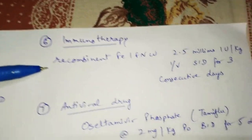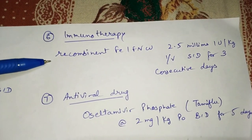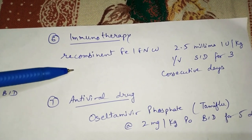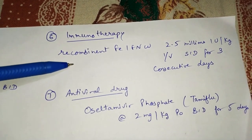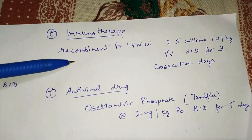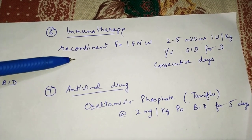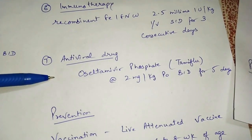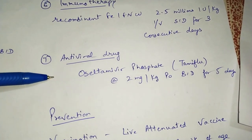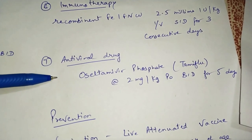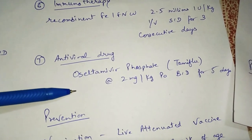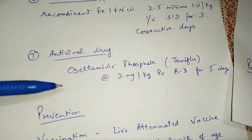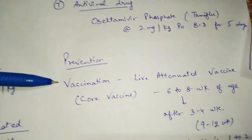Immunotherapy using recombinant feline interferon gamma at 2.5 million IU/kg IV once daily for three consecutive days can be given. The antiviral drug oseltamivir phosphate (brand name Tamiflu) at 2 mg/kg orally twice a day for five days can also be used.